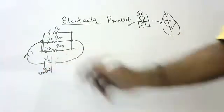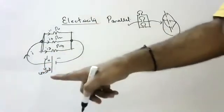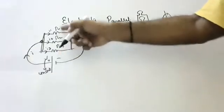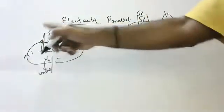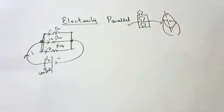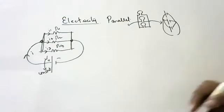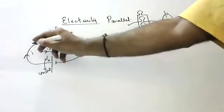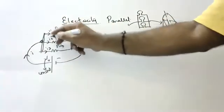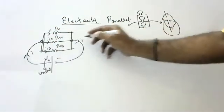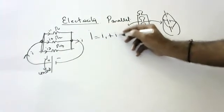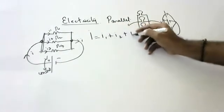Unlike series where current I is constant, here potential is constant — because all of them are under the same voltage, potential is constant and current is different. So the total current I divides into I1, I2, I3, and they combine back to I. So total current I is equal to I1 plus I2 plus I3.